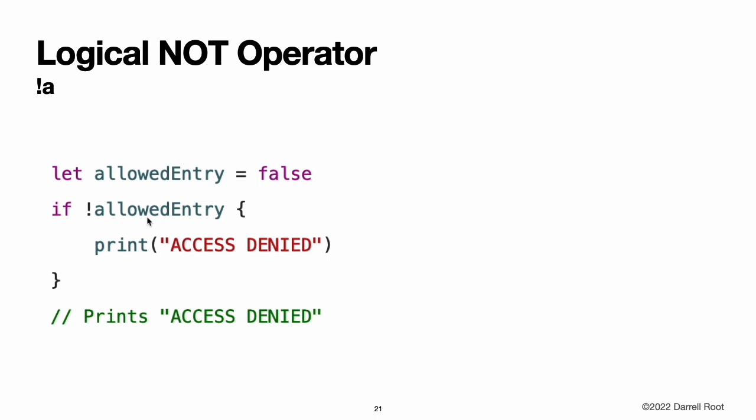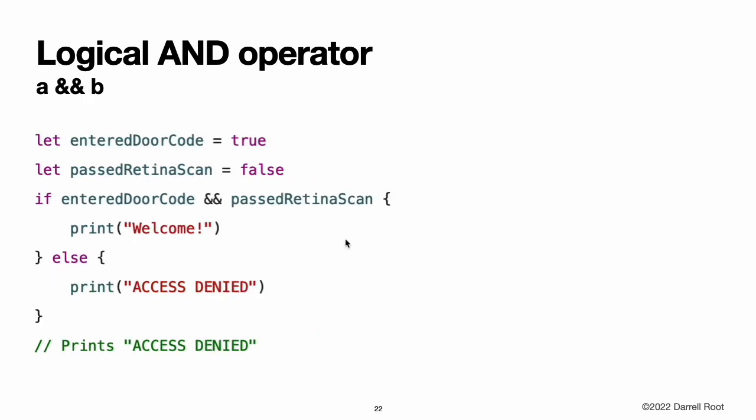Careful choice of Boolean constant and variable names can help to keep code readable and concise while avoiding double negatives or confusing logic statements. The logical AND operator creates logical expressions where both values must be true for the overall expression to also be true. If either value is false, the overall expression will also be false. In fact, if the first value is false, the second value will not even be evaluated because it cannot possibly make the overall expression equate to true. This is known as short-circuit evaluation.